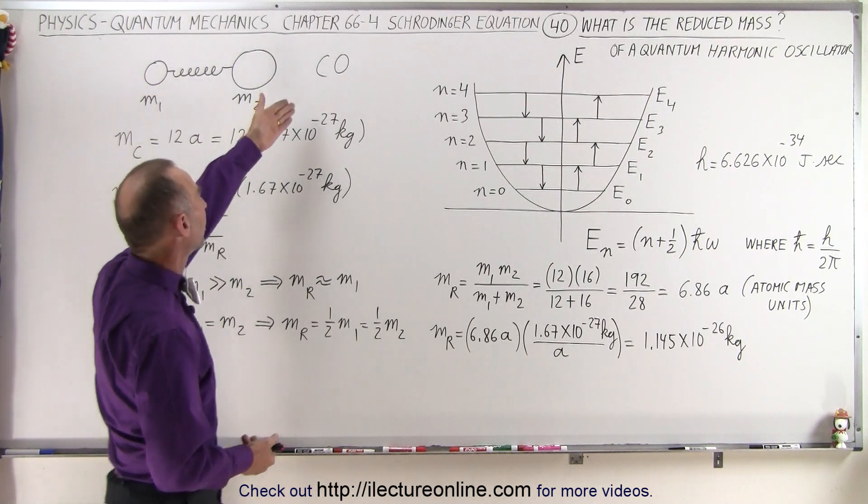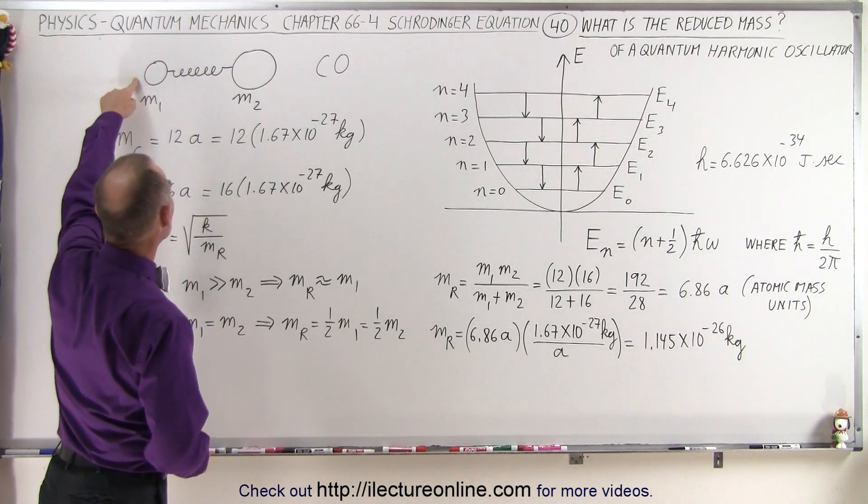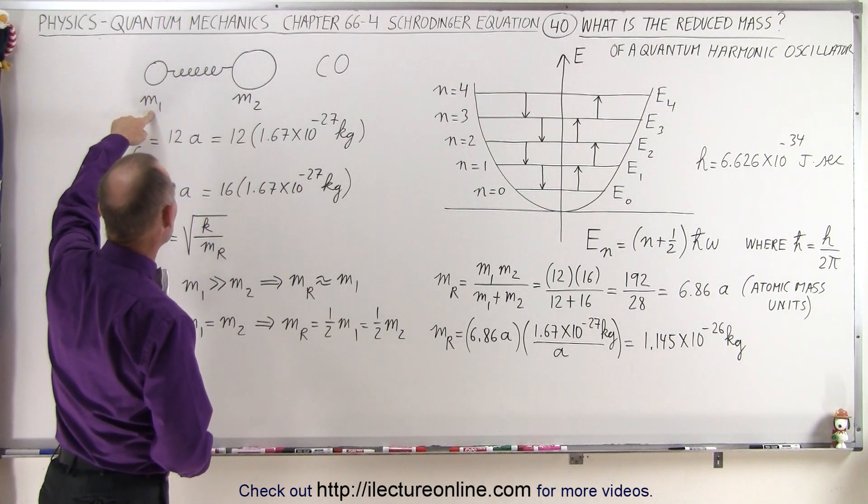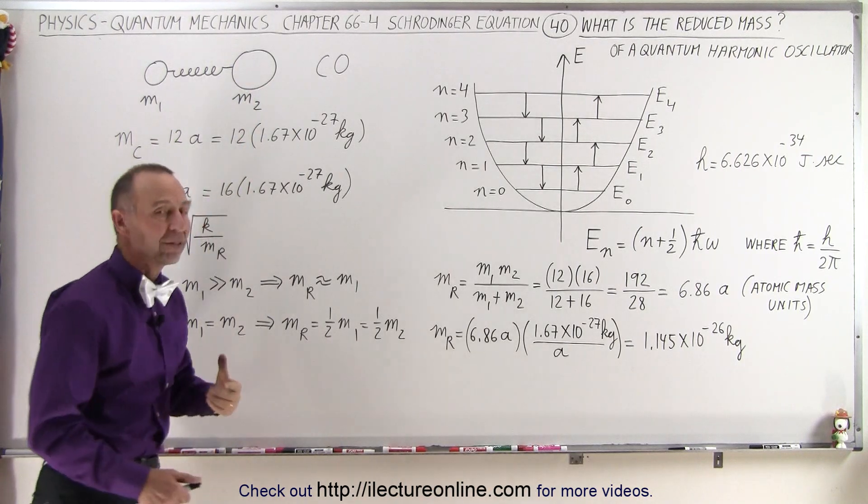Let's say, for example, a carbon monoxide molecule that has an atom that is carbon, so let's call that with a mass of M1, and an atom that is oxygen, let's call that a mass of M2.